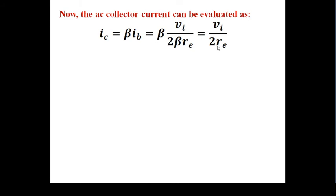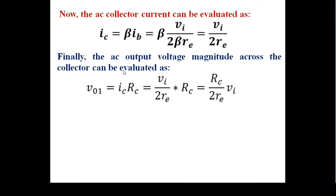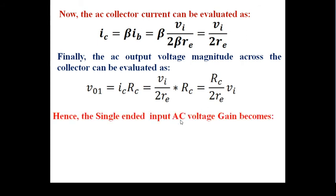Now we find the output voltage. V_out1 equals IC times RC, as per the hybrid pi equivalent model. Substituting IC equals vi divided by 2*re, we get V_out1 equals vi times RC divided by 2*re. Therefore, the AC voltage gain for single-ended input is V_out1 divided by VI, which equals RC divided by 2*re.